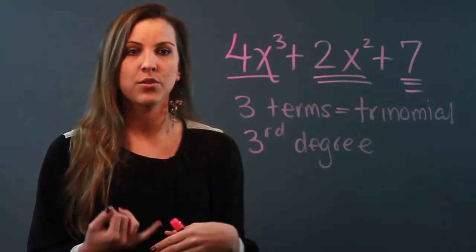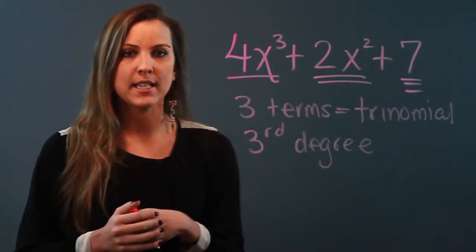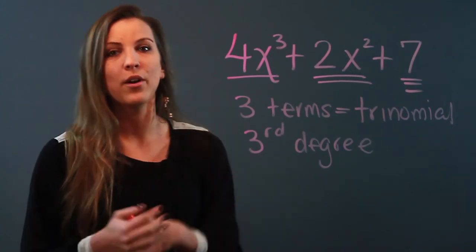And then for the degrees, you can simply say third degree because the highest exponent was three. It would be second degree if the highest exponent was two, first degree if the highest exponent was one, and so forth. And that is how you describe a polynomial.